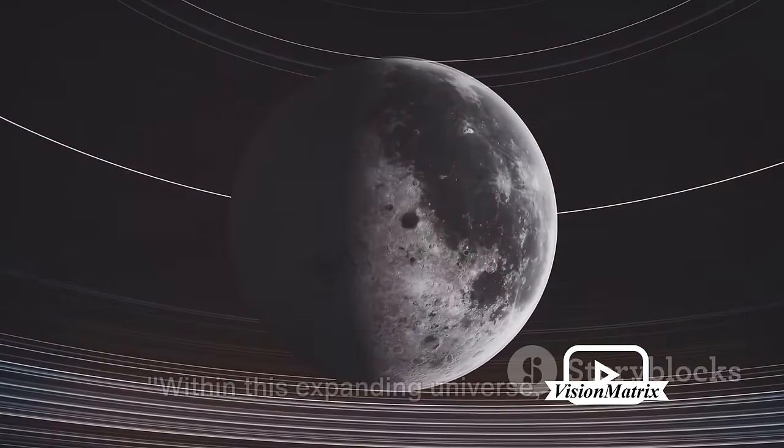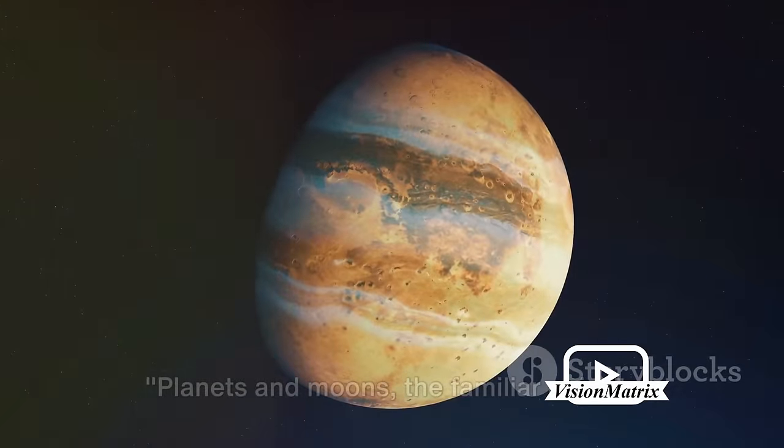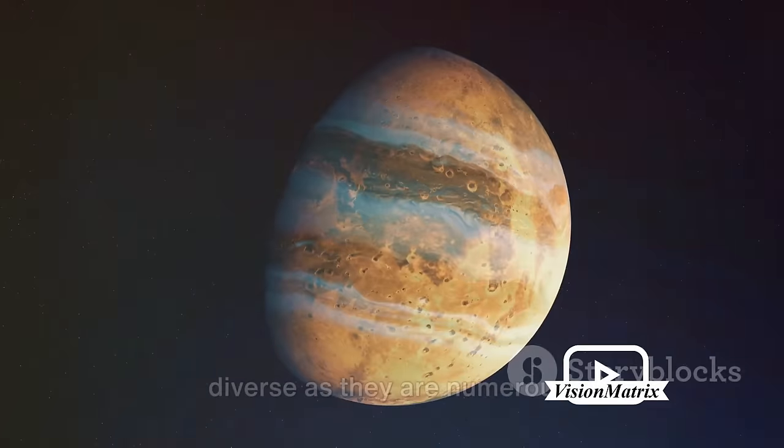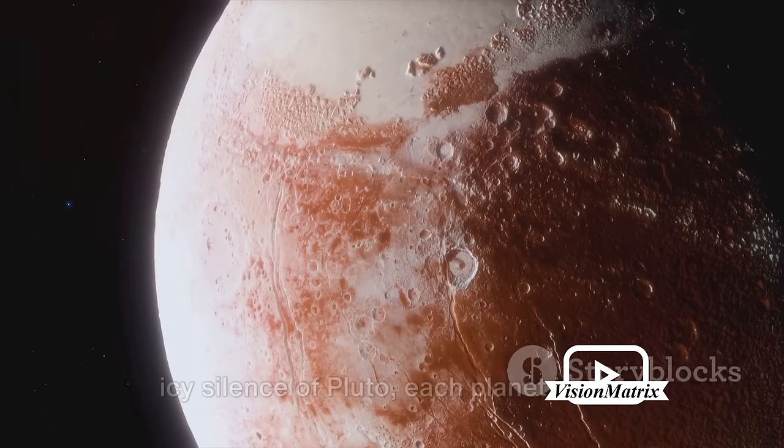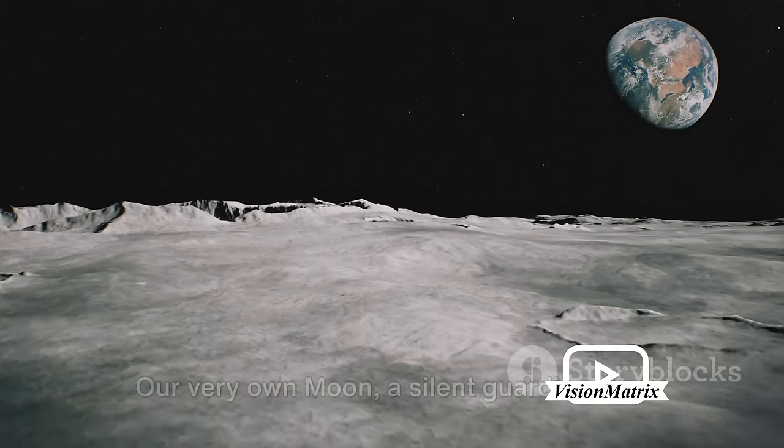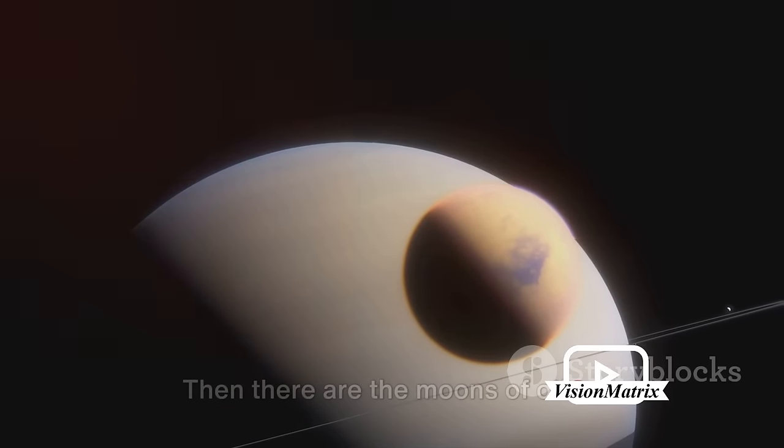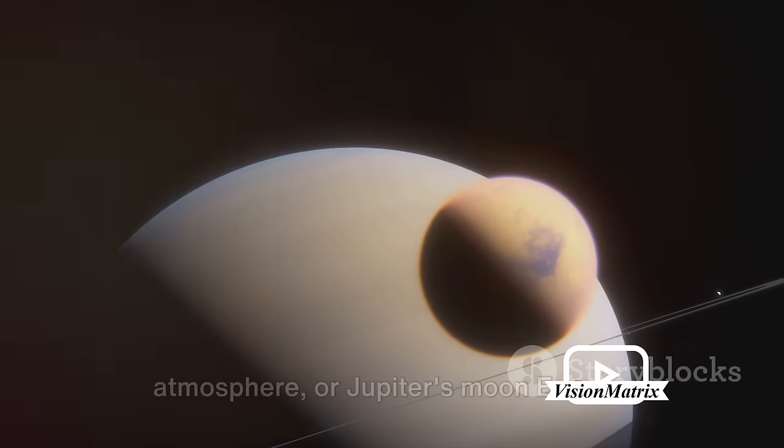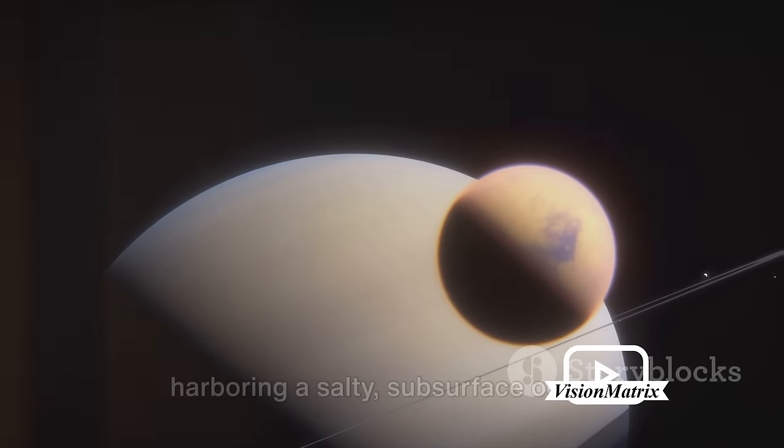Within this expanding universe, we find our home planets and moons. Planets and moons. The familiar objects in our cosmic neighborhood. Yet these celestial bodies are as diverse as they are numerous. From the raging storms on Jupiter to the icy silence of Pluto, each planet in our solar system has its unique character. Our very own moon, a silent guardian, has been a source of fascination for millennia. Then there are the moons of other planets like Titan, Saturn's largest moon with its methane lakes and thick atmosphere. Or Jupiter's moon Europa, hidden beneath a crust of ice, possibly harbouring a salty subsurface ocean.